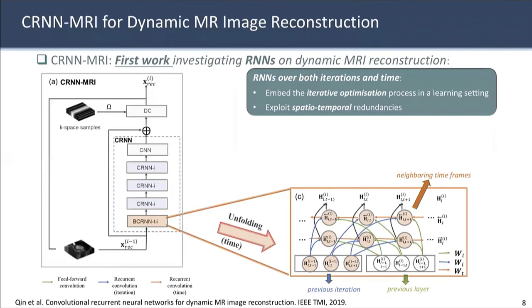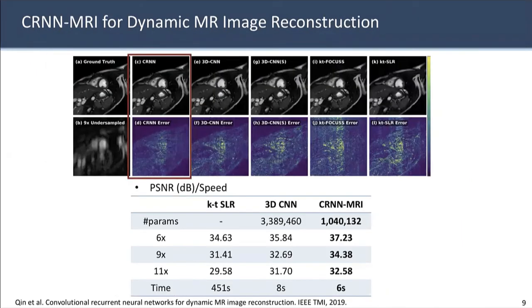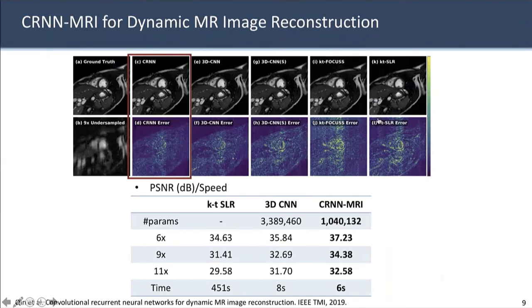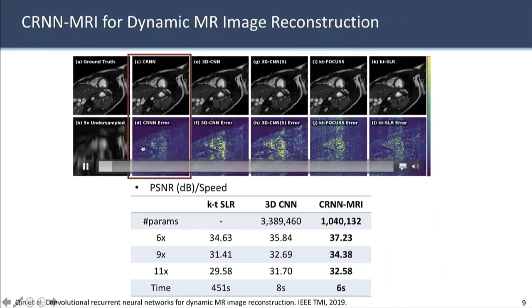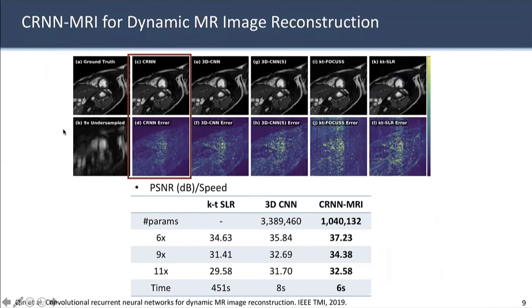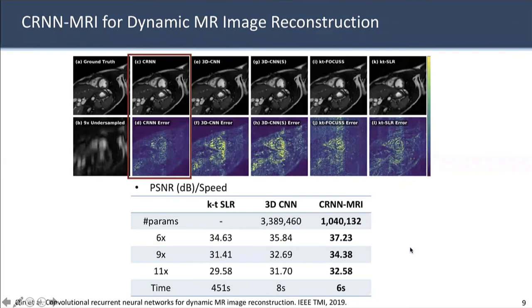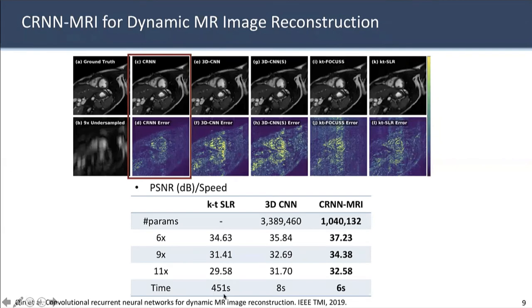This is the first work proposed to use RNNs on dynamic MRI reconstruction. Comparing with traditional compressed sensing approaches as well as deep learning baselines, the CRNN network achieves much better performance compared to compressed sensing methods, especially around dynamic regions. This result is from nine-times undersampled data. Quantitatively, under different undersampling rates, the proposed deep learning approaches can outperform KT-SLR. In particular, the proposed RNN network gives much better improvements, and also achieves a much faster reconstruction speed compared to KT-SLR.